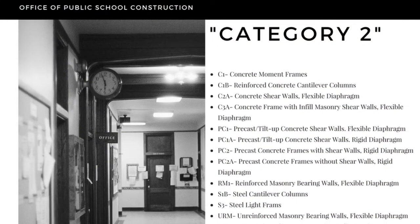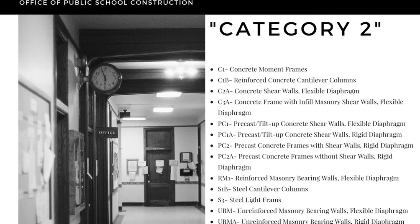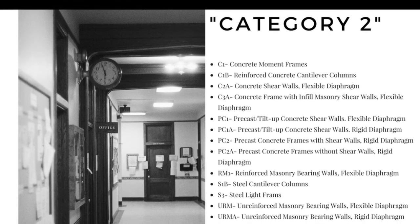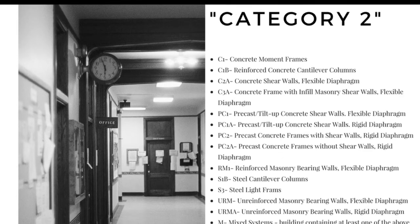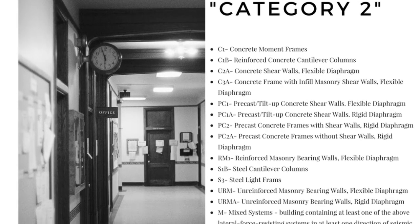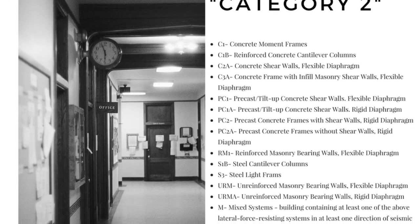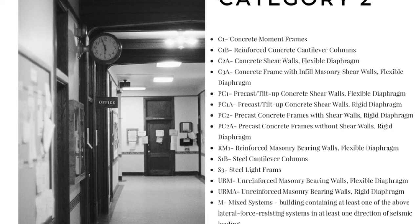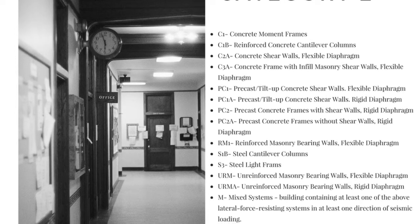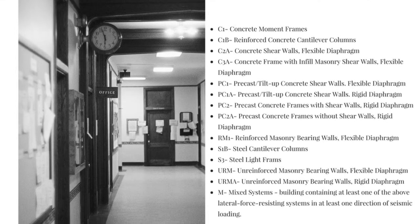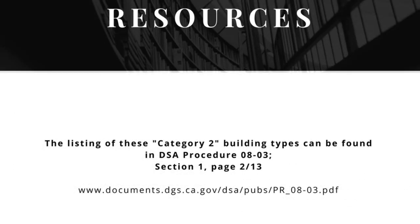Now back to the discussion on category 2 building types. The list you see here is all of the eligible category 2 building types. This list can be found in DSA Procedure 08-03, section 1, which is on page 2 of 13.